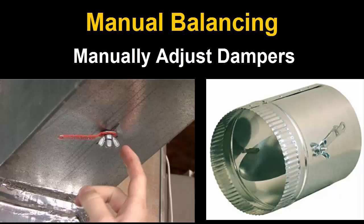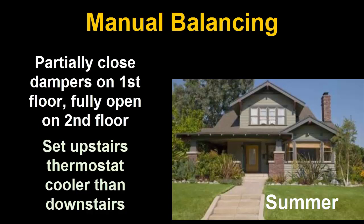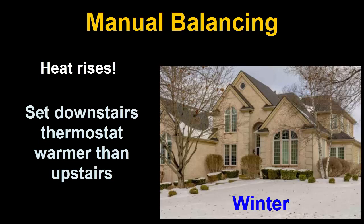Manual balancing: you may be able to manually balance the airflow by adjusting the dampers in the ductwork. For example, in the summertime, you may try partially closing the dampers in the ducts going to the first floor and fully opening the ones to the second floor. This often takes a few tries to get them set just right. If you have separate HVAC units feeding each floor, try setting the thermostat for the upstairs about 2 to 3 degrees cooler than the downstairs in the summer, because heat rises. In the winter, set the downstairs thermostat 2 to 3 degrees warmer than the upstairs.